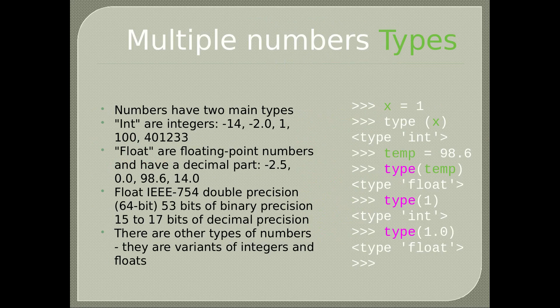Multiple number types. Numbers have two main types: int are integers (e.g., -14, 1, 100, 401, 233), and float are floating point numbers with a decimal part (e.g., -2.5, 0.0, 98.6, 14.0). Float uses IEEE 754 double precision 64-bit, with 53 bits of binary precision and 15 to 17 bits of decimal precision.